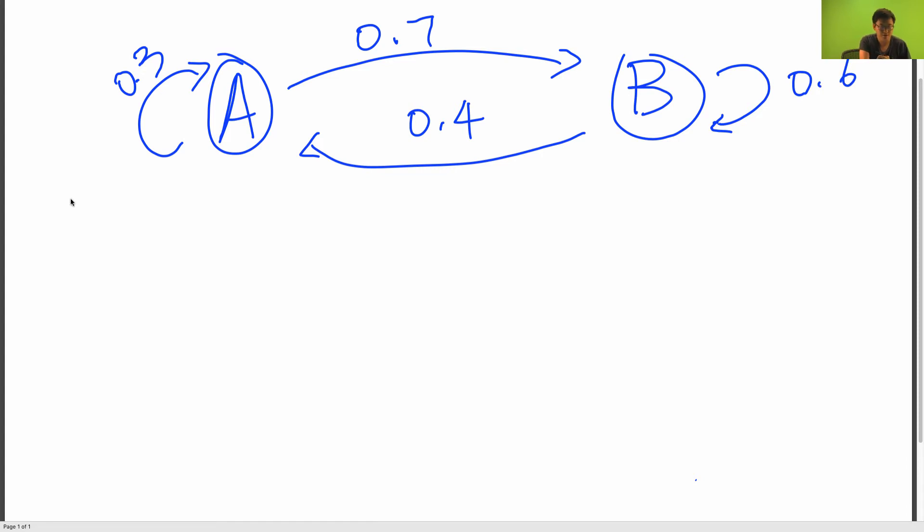So let's write out the probability transition matrix here. So it's a two-by-two matrix since we have two states. So A goes to A with probability 0.3, A goes to B with probability 0.7, B goes to A with probability 0.4, and then B goes to B with probability 0.6.